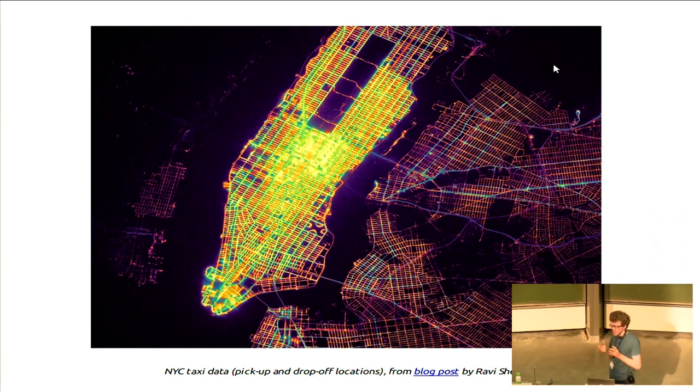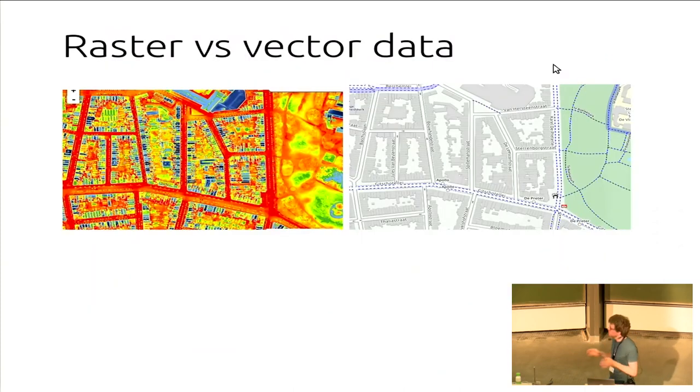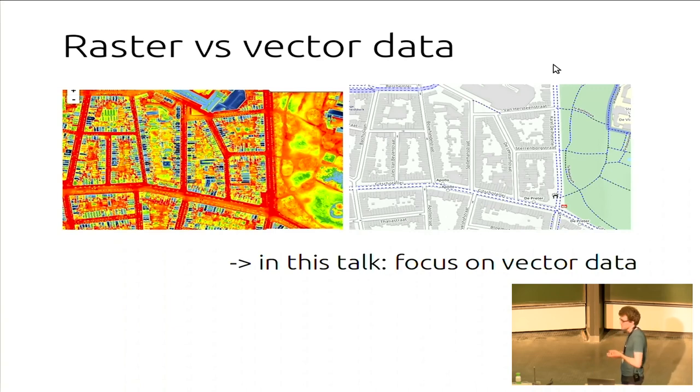Now, if we talk about geospatial data, there are two big families of data. On the one hand, left you see an example of raster data, typically from, for example, satellite imagery. Here you see the heat loss of buildings, but it's grid-based, so it's pixels. On the other hand, you have vector data, which is coordinate-based, so you have objects with certain coordinates, and there are relationships between those coordinates.